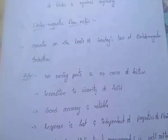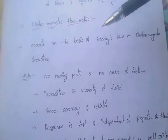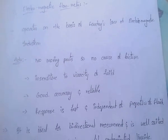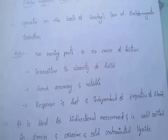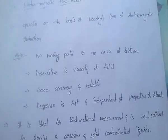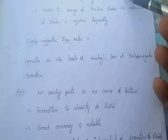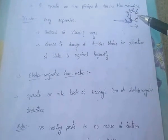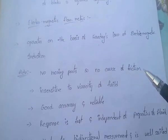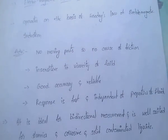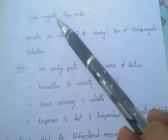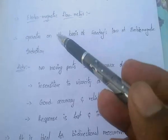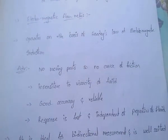To overcome these disadvantages, electromagnetic flow meters were developed. Electromagnetic flow meters operate based on Faraday's laws of electromagnetic induction. The advantages of electromagnetic flow meters include: no moving parts, so there are no friction losses. They are also insensitive to the viscosity and properties of the fluid, meaning they are independent of fluid properties.